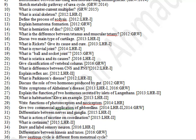Explain the function of two hormones secreted by the islets of Langerhans. What is habituation? Give an example. Write the functions of photoreceptors and nociceptors. Give two commercial applications of gibberellins. Differentiate between nerve and ganglia.